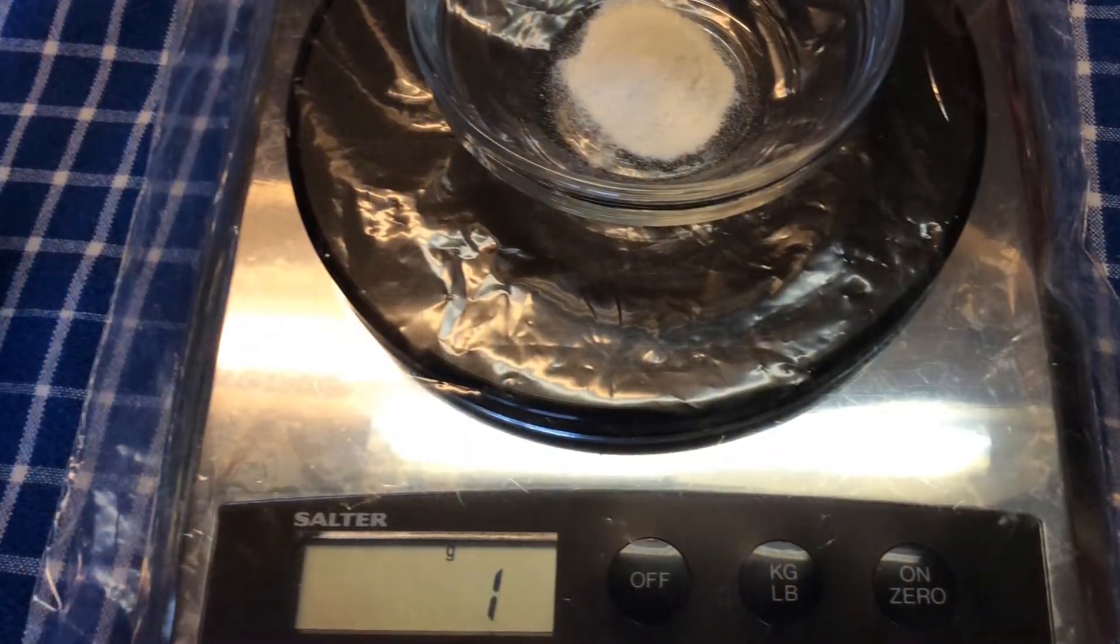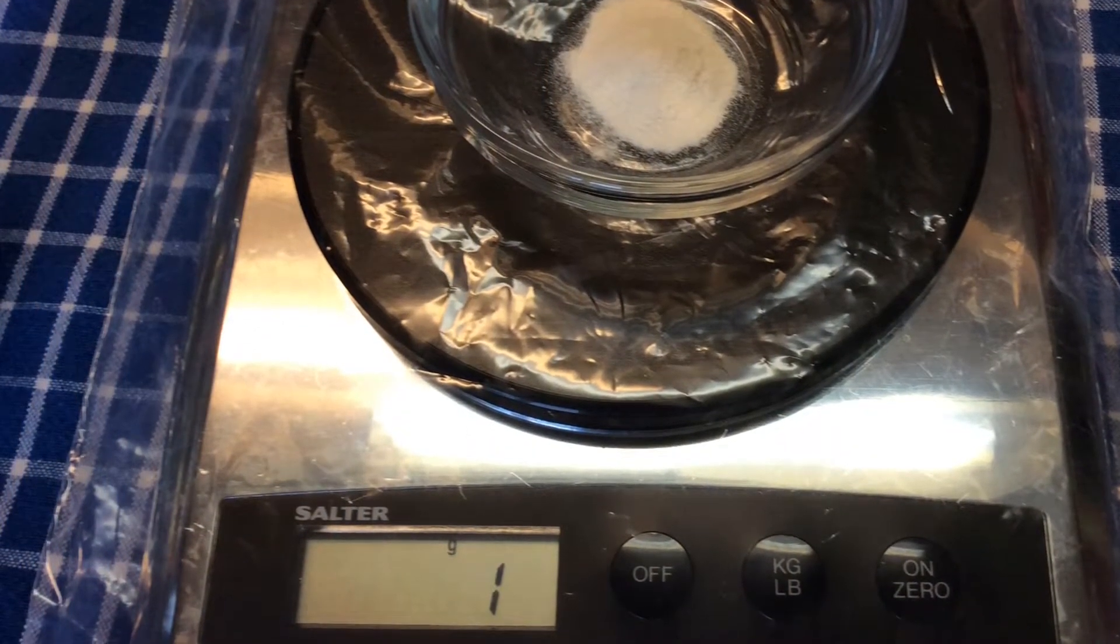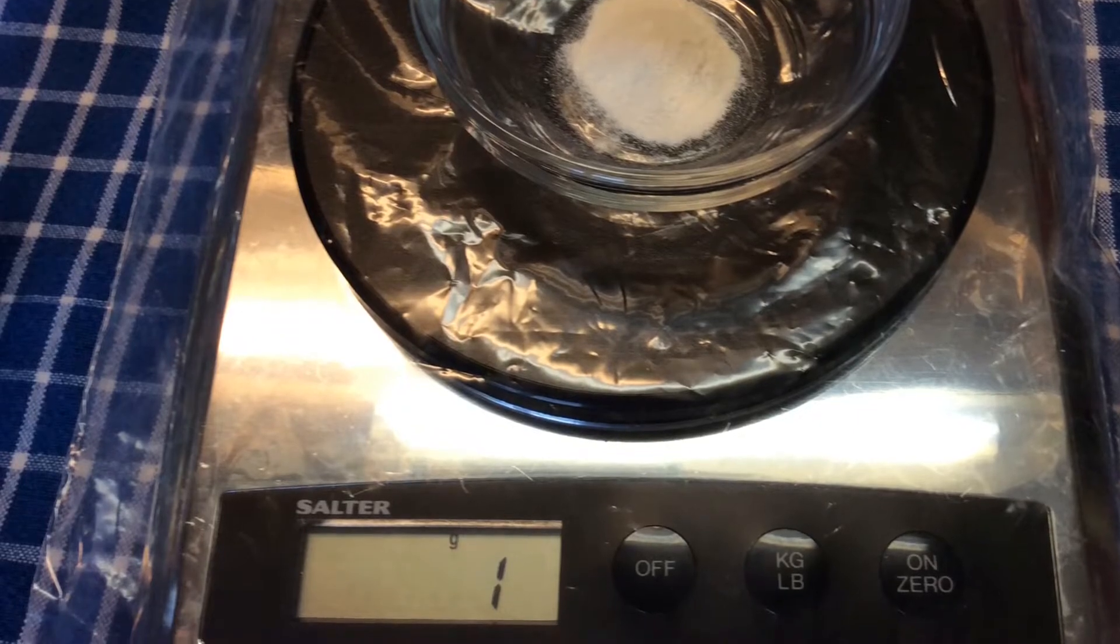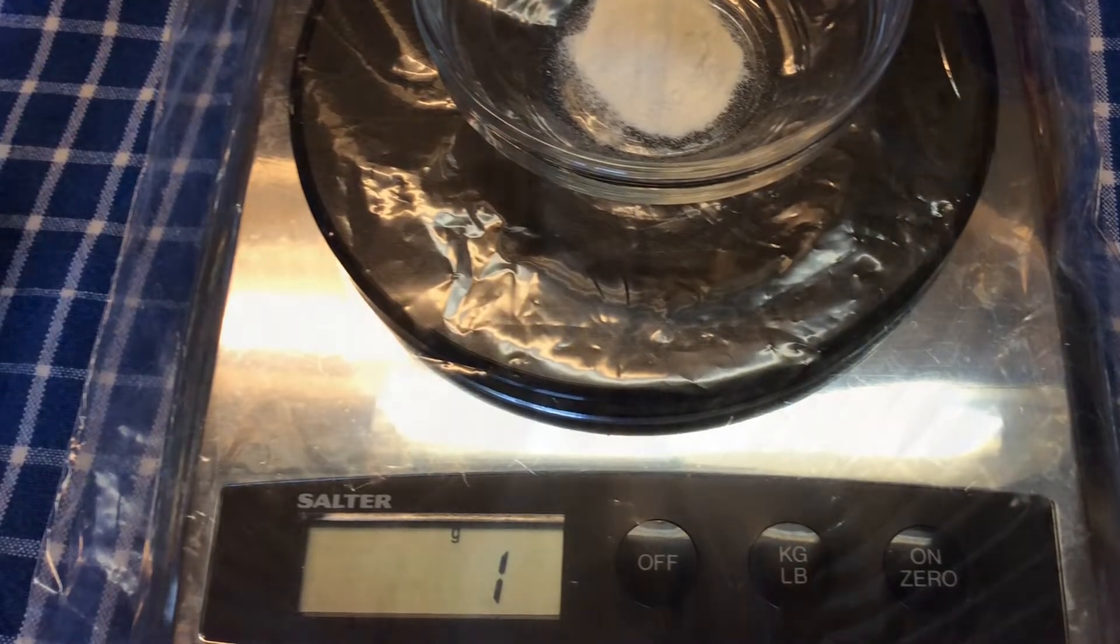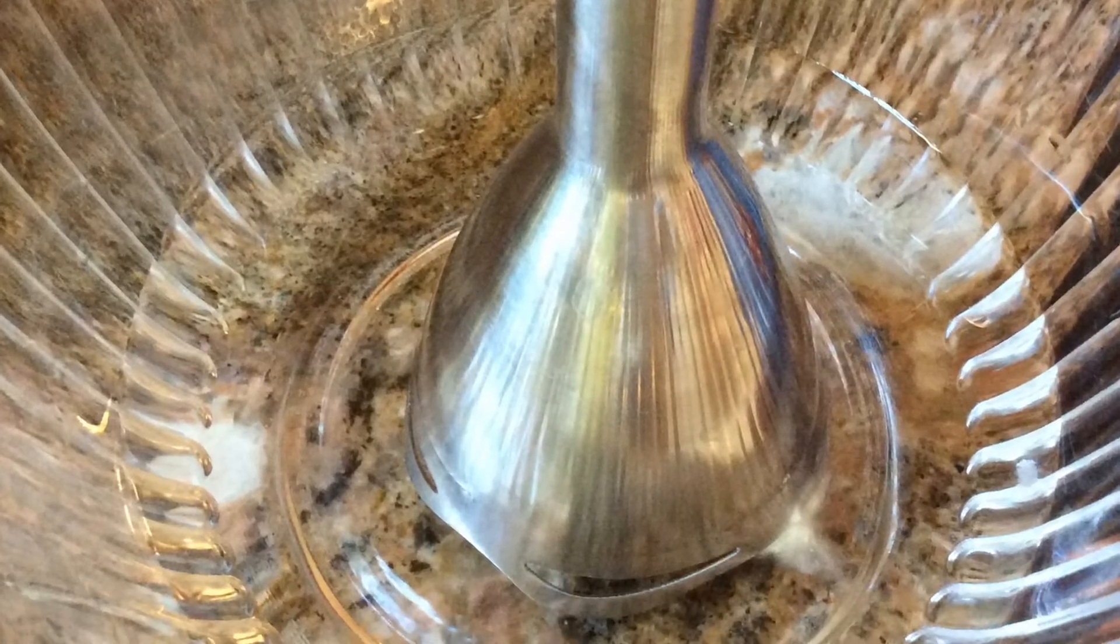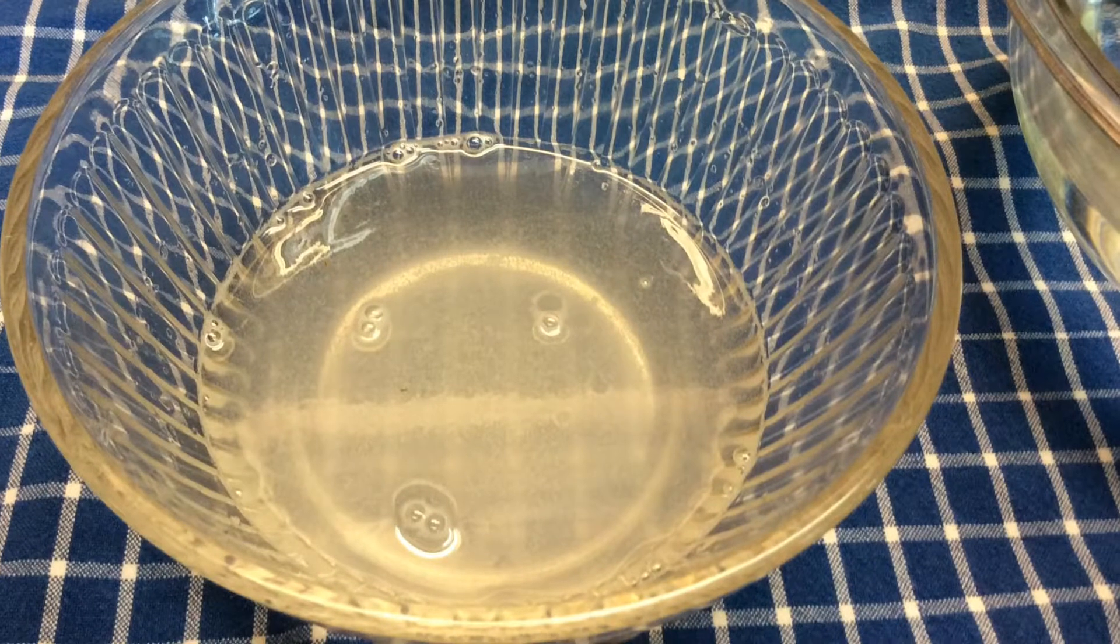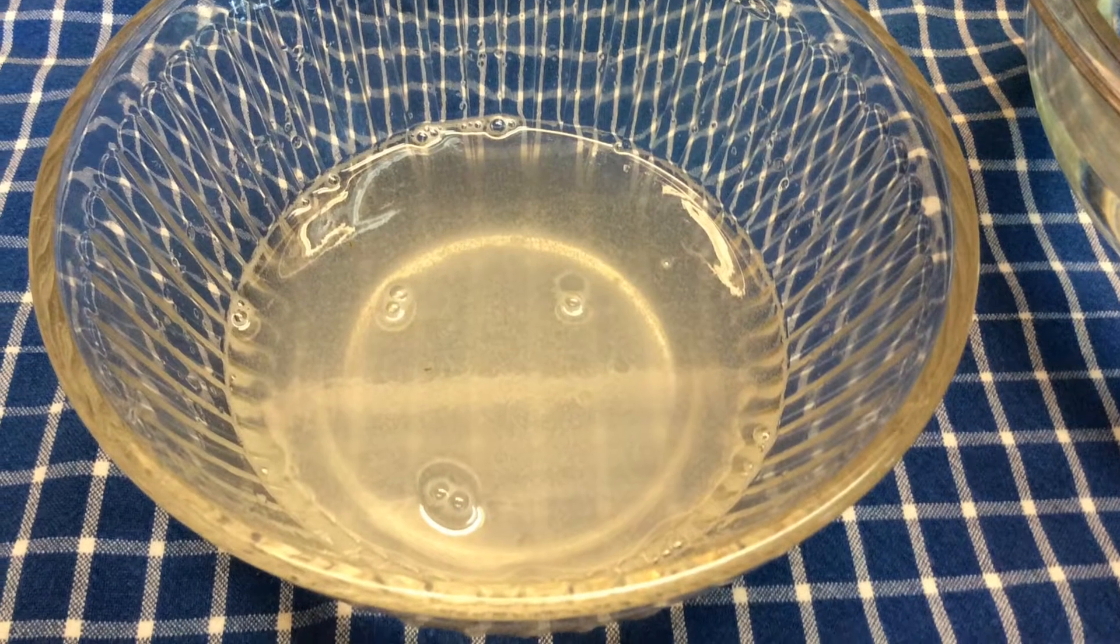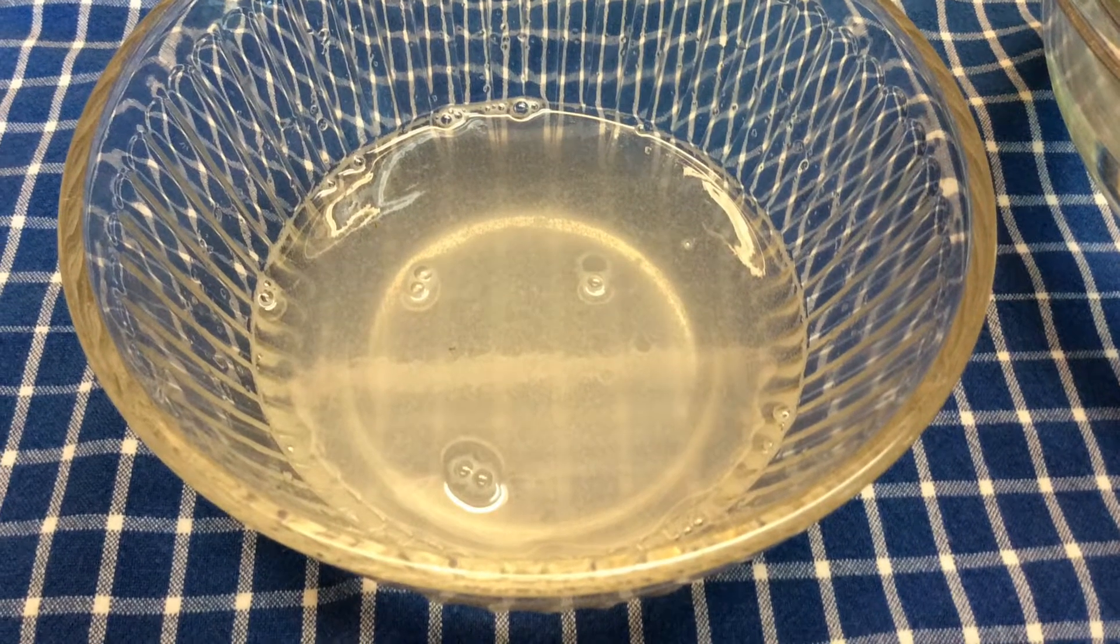First, we mixed one gram of sodium alginate with the one cup of water. Don't forget, use a mixer to mix. Mix and leave it alone for 50 minutes so the air bubbles won't be there.